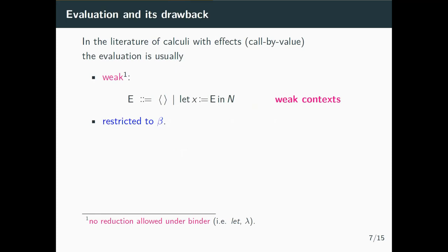Following standard practice, we define evaluation as the closure of all rules under weak contexts, where weak means no reduction is allowed under binders, and binders are let and abstractions. Weak contexts are the empty context and the let expressions. The operational understanding: in 'let x be m in n', we reduce m until we reach a return value, then bind this value to x and substitute it in every occurrence of x in n.